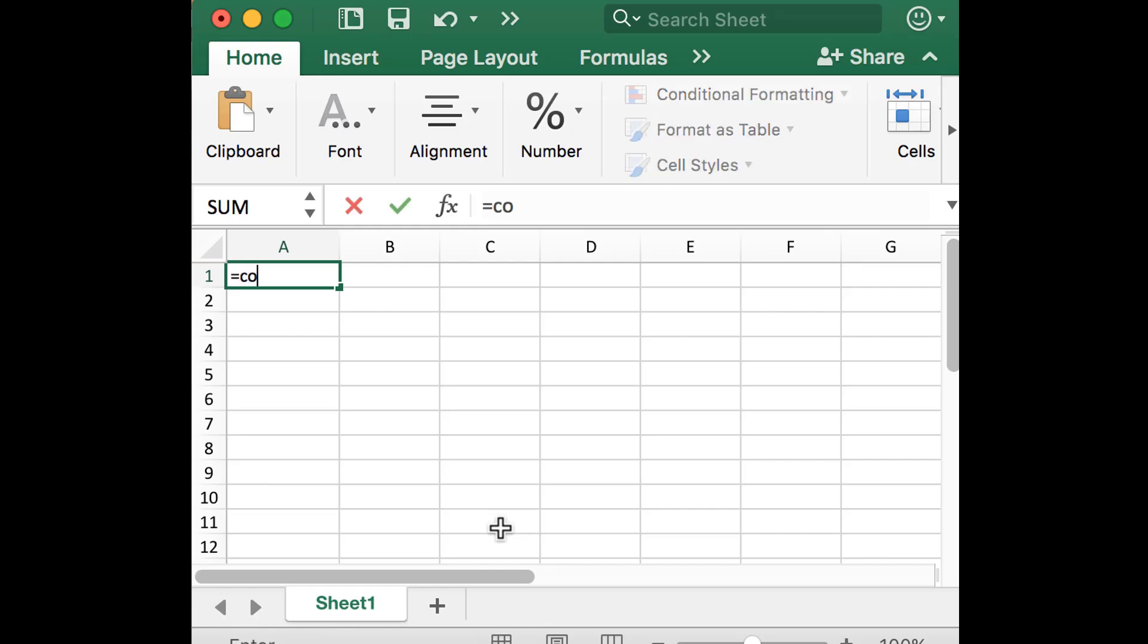So now we're in the Excel interface and we'll begin by typing out cosine pi over 2. And when we push enter, we see that this value, once again, is not 0.